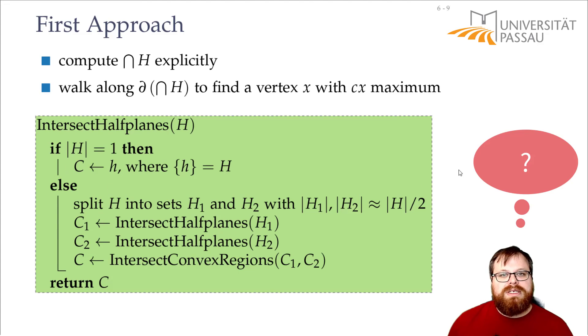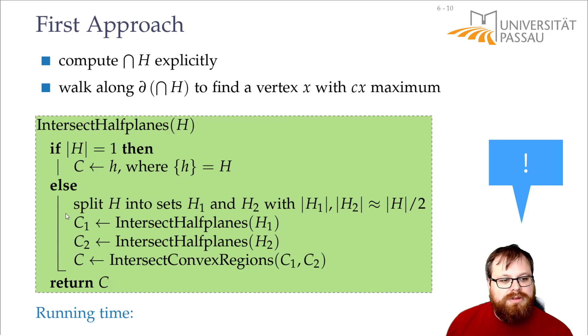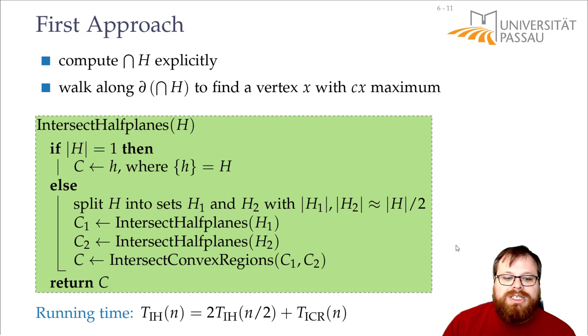What is the running time of this algorithm? Well, this is a recursion. So if we take n half planes, what do we have to do? We have to run the same algorithm twice more for n over two half planes each, plus we have to run this algorithm once. So the time for n half planes is two times the time for n over two half planes, plus the time to intersect two convex regions of n half planes. But the big question is, how can we do this? Before we can figure out about the running time here, we have to know this algorithm and how long it takes. And that we want to do in the next part.